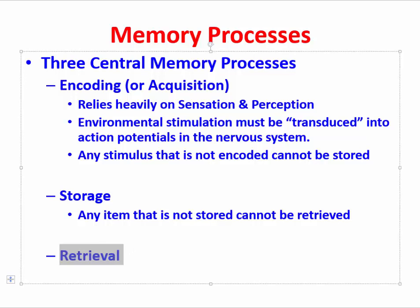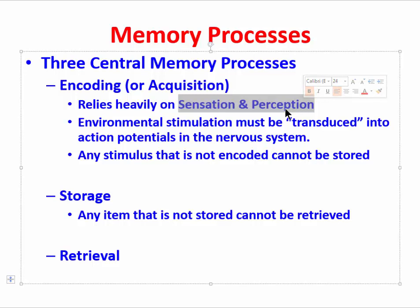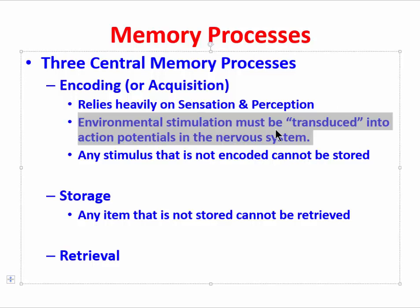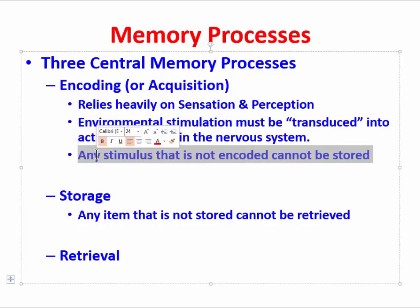In the slides to come, we'll say much more about each of these in turn, but for the moment let's note a few things. Encoding is used synonymously with acquisition, and the encoding or acquisition phase relies very heavily on sensation and perception. Environmental stimulation must be transduced into action potentials in the nervous system. Sensation helps us take environmental energy — acoustic, electromagnetic, physical pressure, or chemical energy — and transduce or transform that into an action potential, the currency of the nervous system. Any stimulus that is not encoded cannot be stored.